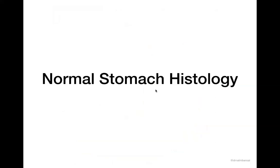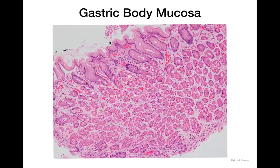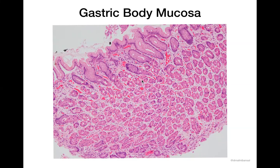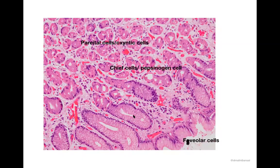Moving on to normal gastric histology — this is the normal gastric body mucosa and there is a subtle difference between the gastric body and the gastric antrum. There are certain specialized cells which reside in the gastric body mucosa that are not present in the antrum. On the surface we have the foveolar architecture — these foveolae are mostly tubular in the body part. Beneath the foveolae we have numerous small tubular gastric glands lined by two kinds of specialized cells: the chief cells and the parietal cells.